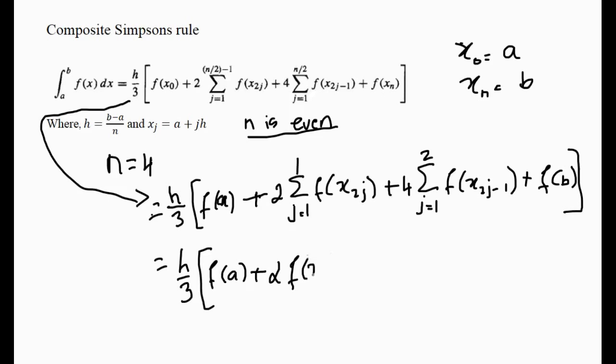Plus 4 times summation j equals 1 to 2. So when j is 1, you're going to get 4 times f of... 1 goes in here, 2 minus 1, so that's x_1. Plus you're going to get another 4, and then you're going to get f of x_j equals up to 2, so 2 times 2 is 4, minus 1 is 3, so you're going to get an x_3 here.